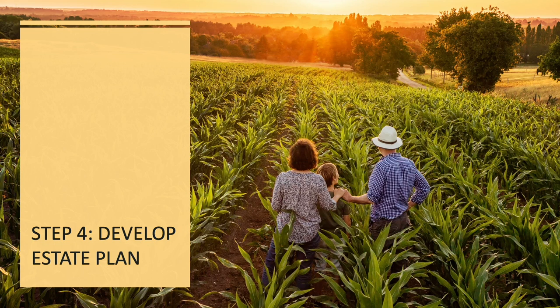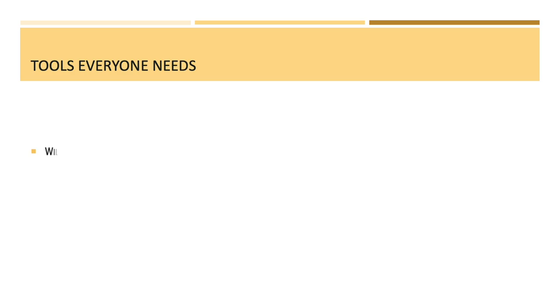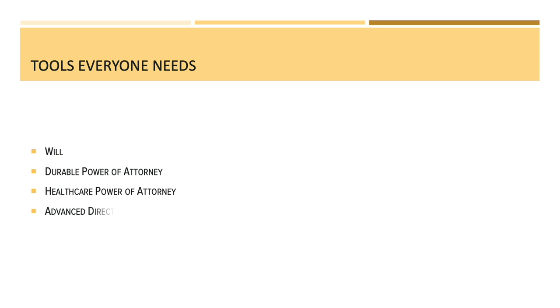Finally, to step four, which is probably why a lot of you actually thought you were coming today, and that is developing your estate plan. What documents do you need to have drafted? We're going to talk through four tools that I think everybody needs to have, regardless across the board: everybody ought to have a will, a durable power of attorney, a healthcare power of attorney, and an advanced directive. So let's walk through each of these four documents.